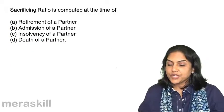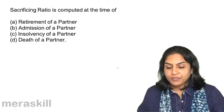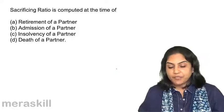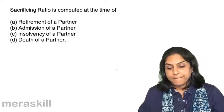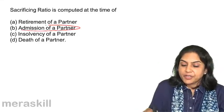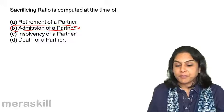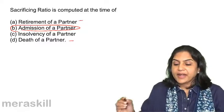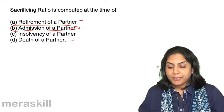Sacrificing ratio is computed at the time of: A. Retirement of a partner. B. Admission of a partner. C. Insolvency of a partner. Or D. Death of a partner. The correct answer is B — Admission of a partner. The gaining ratio is computed at the time of retirement and death of a partner.